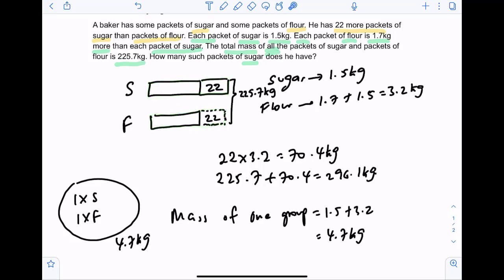I repeat, this is if the number of sugar packets is equivalent to number of flour packets. Now take note, this is for one group of items. The new total mass is now 296.1 kg.